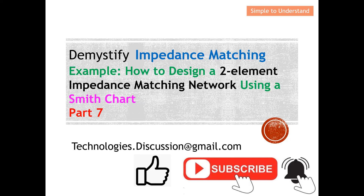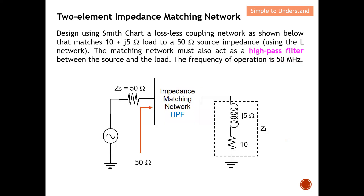This is another example I prepared so that you will fully understand how to design a two-element impedance matching network on the Smith chart. The example: design using a Smith chart a lossless coupling network that matches a 10 plus j5 ohm load to a 50 ohm source impedance using an L network. The matching network must also act as a high pass filter between the source and the load. The frequency of operation is 50 megahertz.